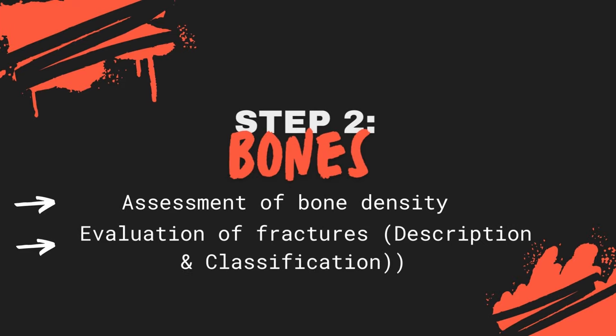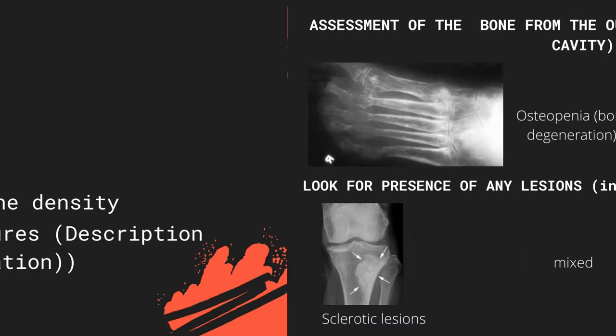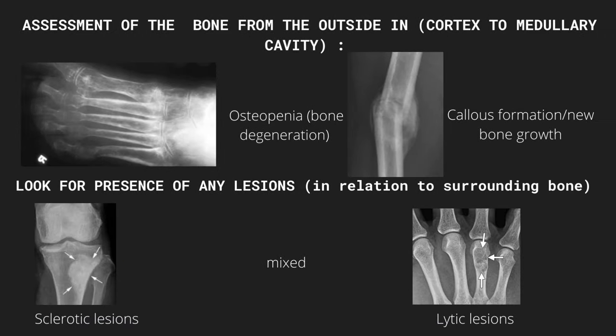The B component of the ABCS approach focuses on bones, where you can comment on bone density and the presence of any fractures. To assess bone density, it is best to adopt an outside-in approach. Begin by looking at the outline of the bone or the cortex, looking for any signs of bone degeneration or bone growth. After assessing the bone contour, look for any lesions within the bone. Lesions can be sclerotic, meaning they appear hyperdense in comparison to the surrounding bone, or lytic, appearing hypodense as a result of disintegration, or a mix of both.